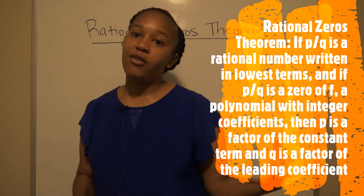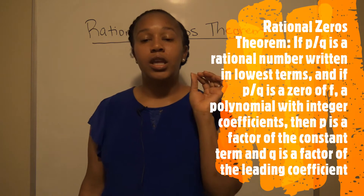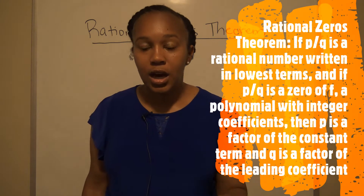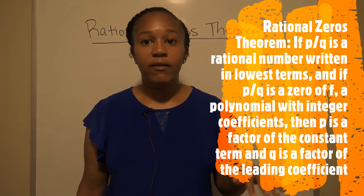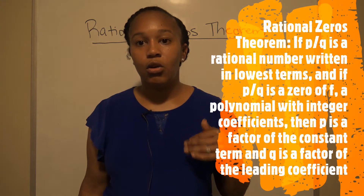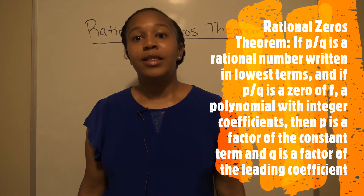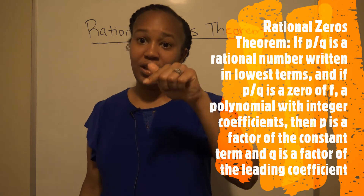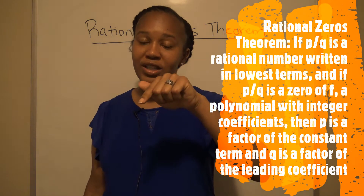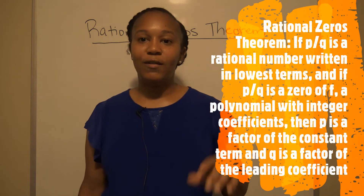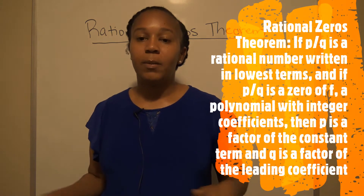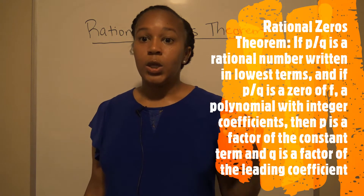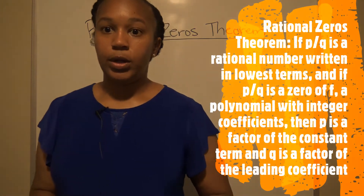Now that's the formal definition, but what it actually means is: if you have a polynomial, look at the constant term and take all its factors, then look at the leading coefficient and take all its factors, then form every possible fraction p over q. That gives you all your possible rational zeros.